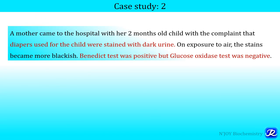Here is a second case of alkaptonuria for exam preparation. A mother came to the hospital with her two-month-old child complaining that diapers were stained with dark urine, and on exposure to air the stains became more blackish. Benedict test was positive but glucose oxidase test was negative. The diagnosis is alkaptonuria — dark-stained diapers becoming more blackish on air exposure is the commonest and earliest presentation seen in patients with alkaptonuria.